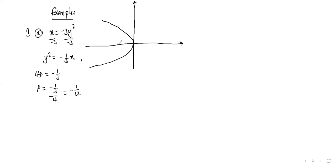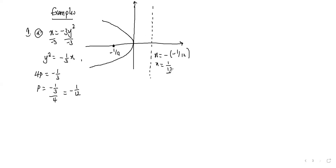The focus is (p, 0) = (-1/12, 0). For the directrix, since it is x = -p, we get x = 1/12. So we have the focus at (-1/12, 0), the vertex at (0,0), and the directrix at x = 1/12.